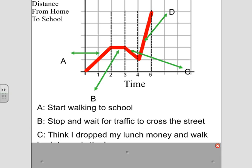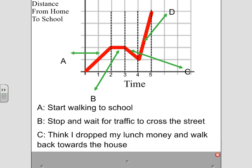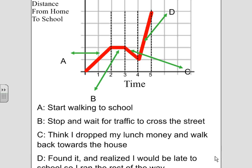And then I'm going to all of a sudden realize, I'm going to think I dropped my lunch money and walk back towards the house. So I'm walking right back towards the home because this is the distance from home to school. Walking back towards the home, still at the same pace, nothing really drastic. And then found it and realized that I would be late to school. So I ran the rest of the way to school. So I was going at a more increasing rate. It was rising a lot quicker.